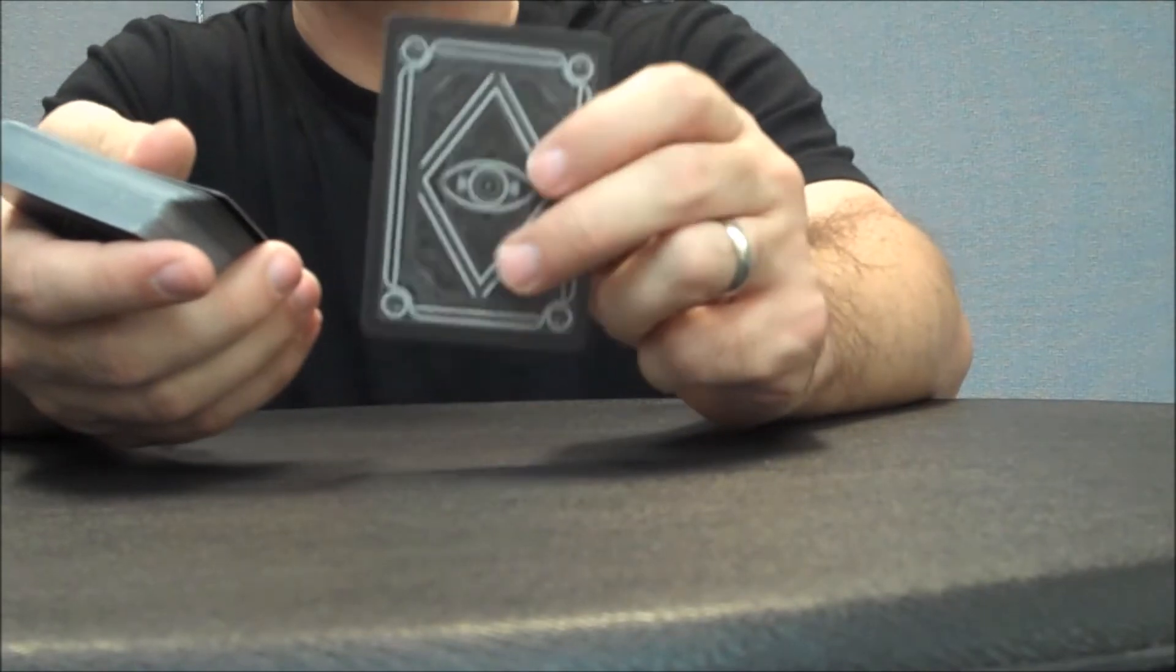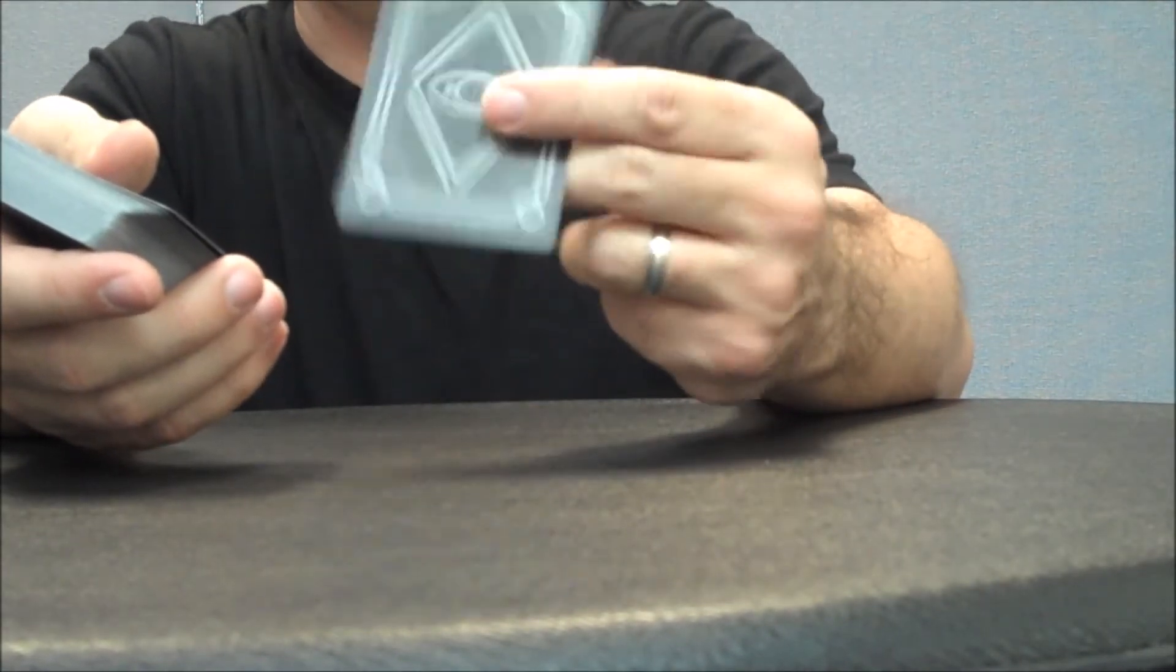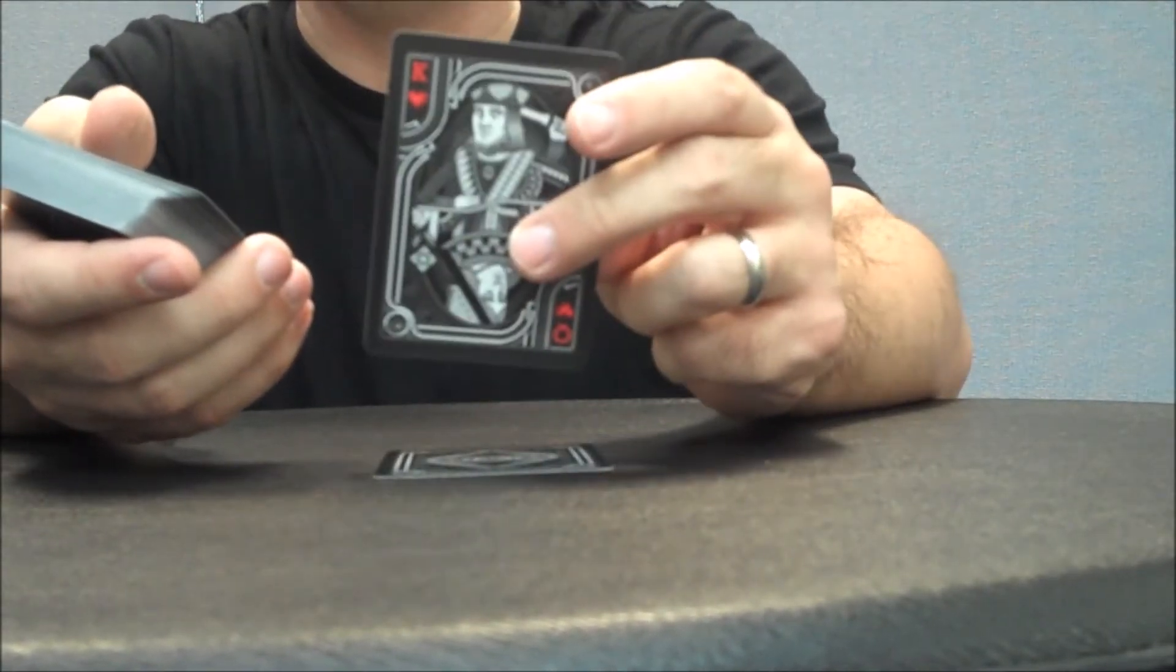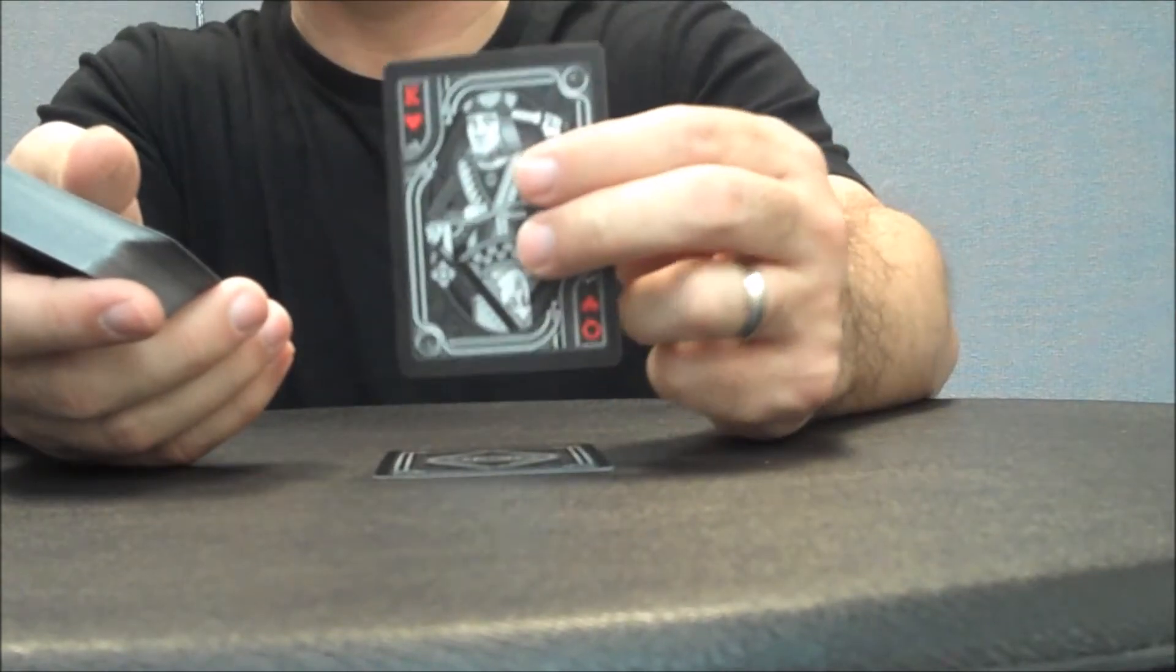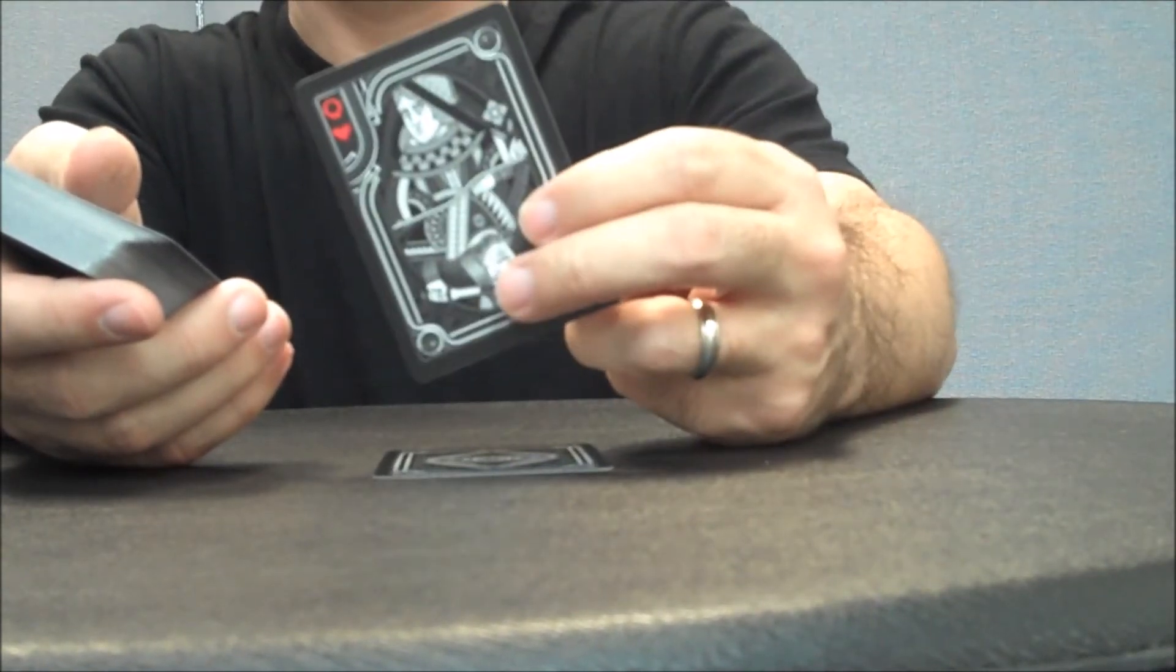With the Blackout Kingdom deck, you're going to get two gaff cards. The first is your double backer, and your second is your double ender. It's a double ender king of hearts, and on the other side you can see it is the queen of hearts.